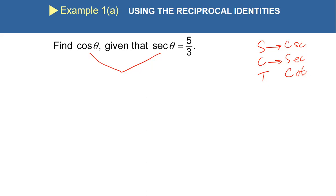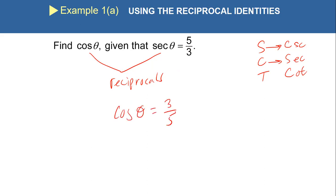So SOH CAH TOA is easy — sine, cosine, tangent — but I need to make sure I remember the order of the reciprocals. Cosine's reciprocal is secant, meaning they are reciprocated — I'm flipping their values. So if I know they are reciprocals, I can easily identify what cosine θ has to be. If secant θ is 5/3, then cosine θ equals 3/5. That's the beauty of knowing who reciprocates what.